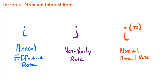That might sound familiar to when we talked about our non-yearly rates. When we converted from a non-yearly rate to an annual effective rate, we used the formula where we took one plus our non-yearly rate to the m power, where m was the number of times that non-yearly rate occurred in a year. So for a monthly rate, m was 12; for quarterly, m was 4; for semi-annual, m was 2.